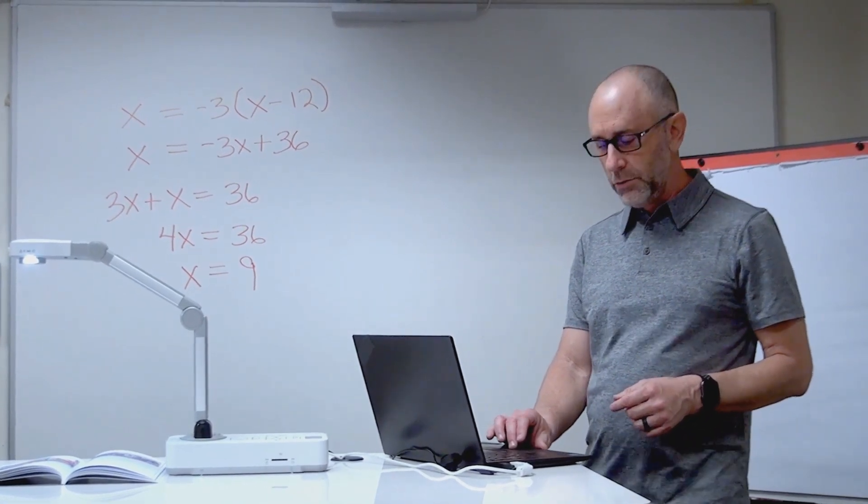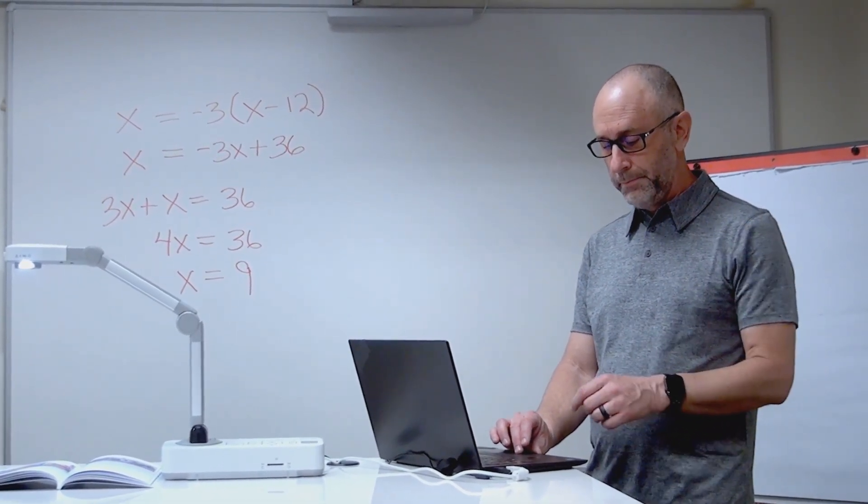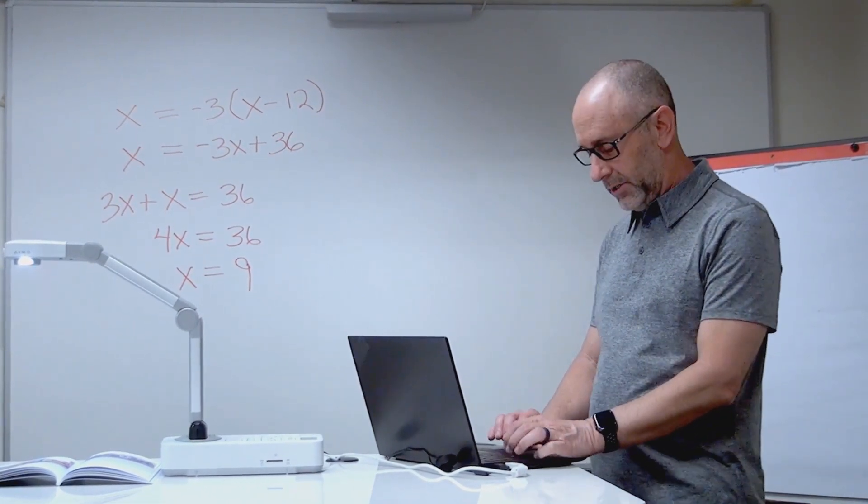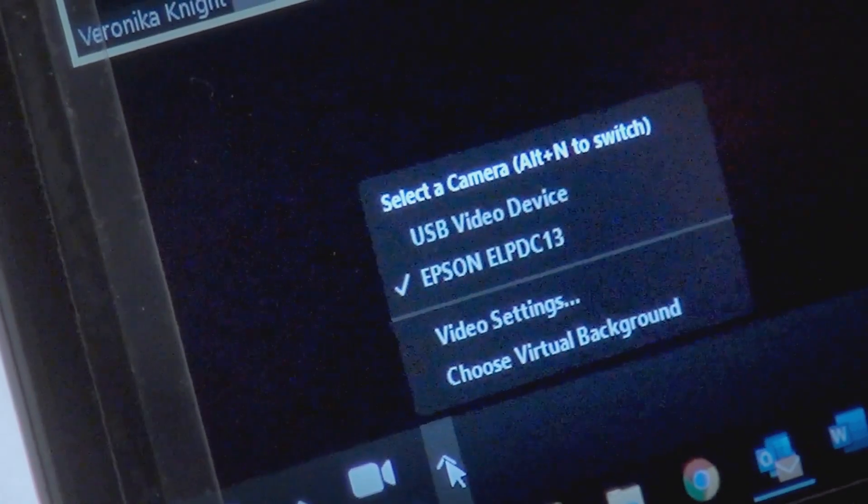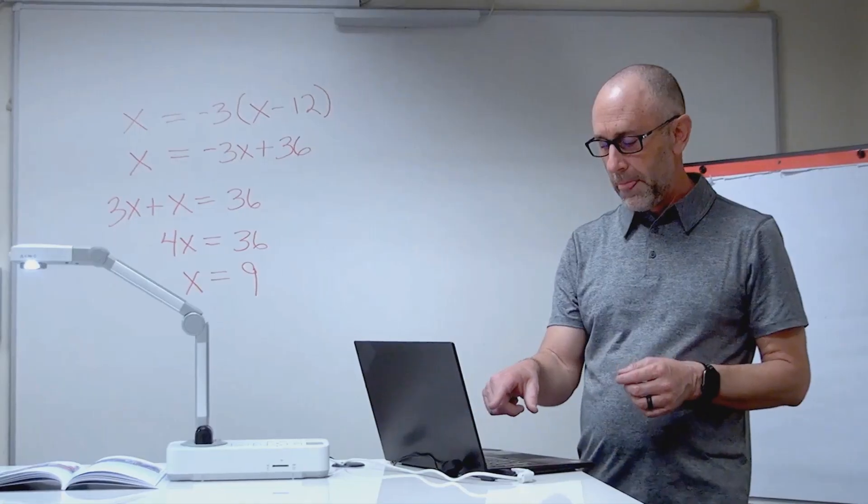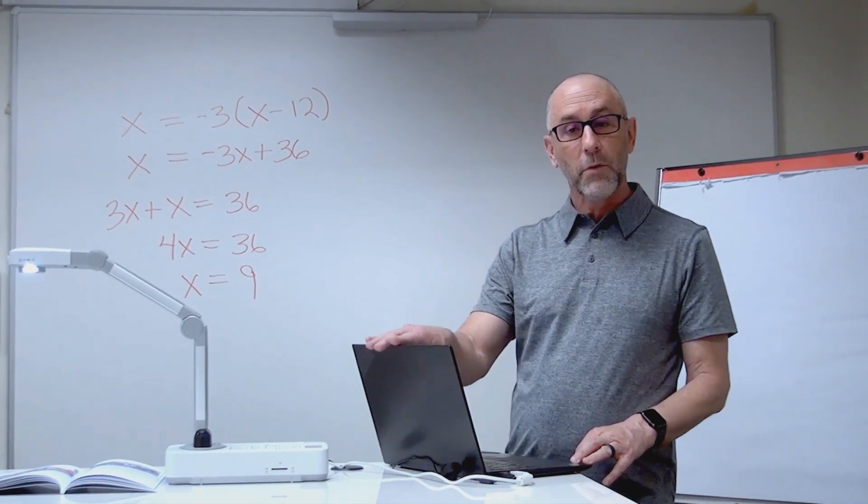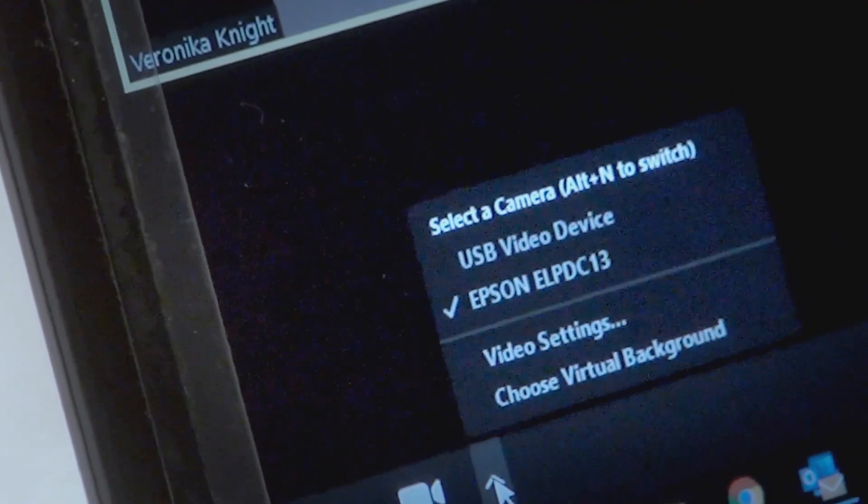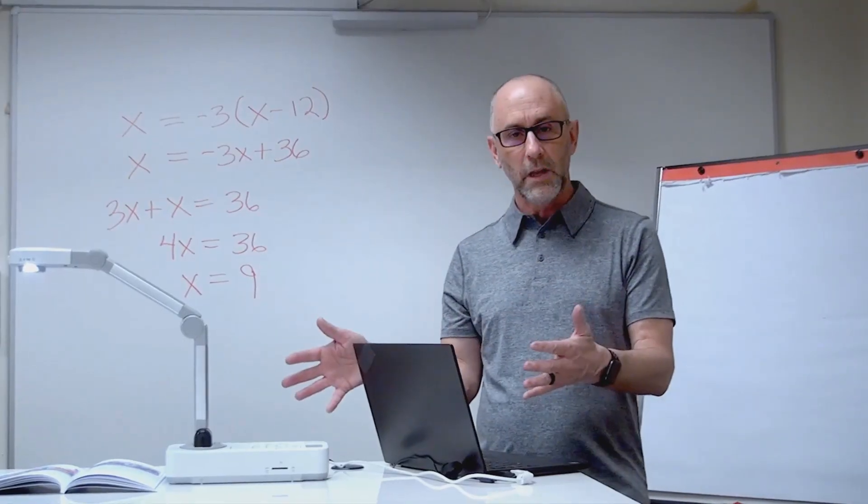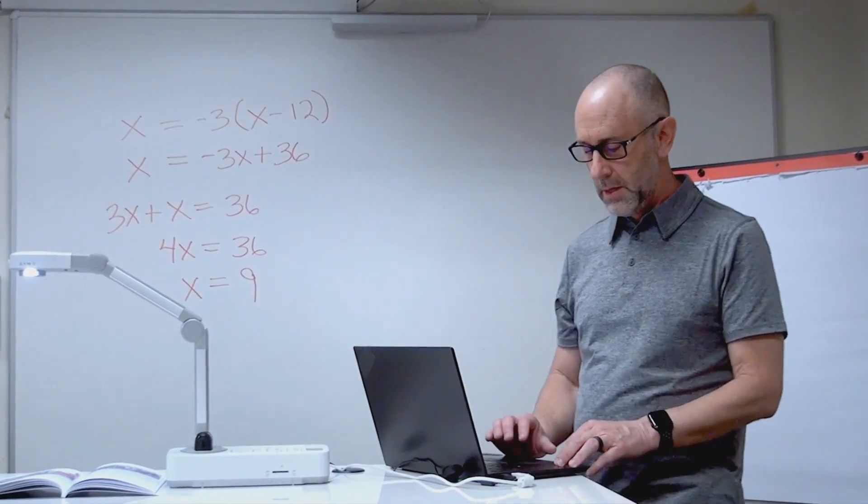Right next to that, there's an up arrow. I'm just going to click on that up arrow, and you should see the cameras that are available to you. On mine, I have the camera that's built into my PC, and then I have the Epson document cameras. This would work with any of our document cameras.